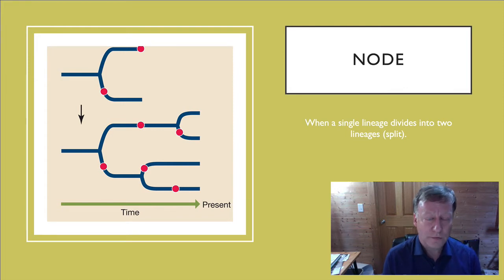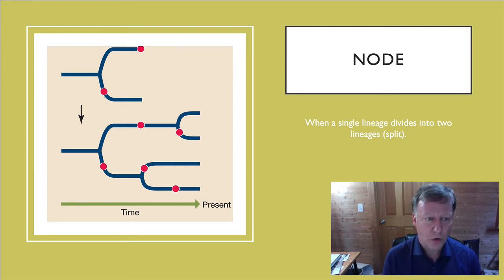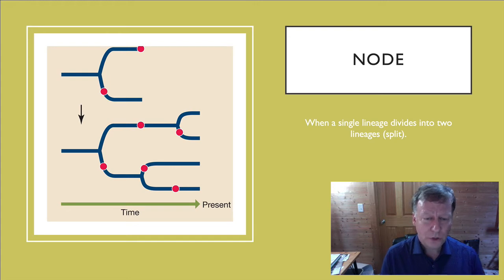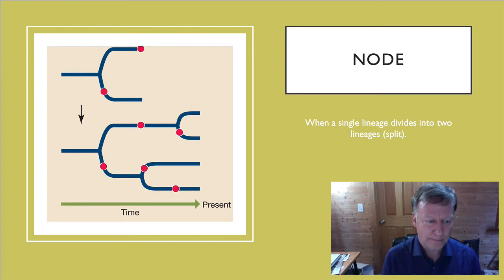Lineages often split, and we call those nodes. Nodes are where you get a split in the line, and this is an indication that speciation has occurred, or a group is split into two distinct lineages that differ over time.